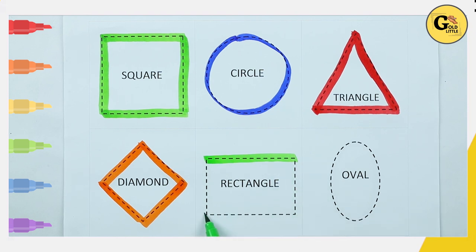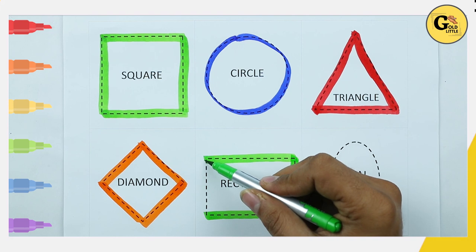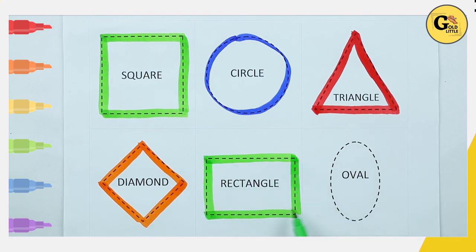One slipping line, two slipping line, one standing line, one standing line. It's a rectangle with green color.